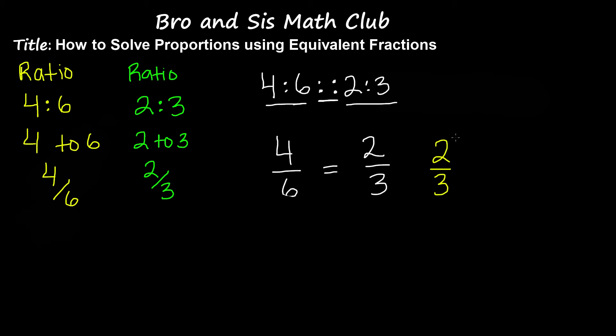So we have the fraction 2 over 3. If I multiply both 2 and 3 by the number 2, I get the fraction 4 over 6. And 4 over 6 is an equivalent fraction to 2 over 3.